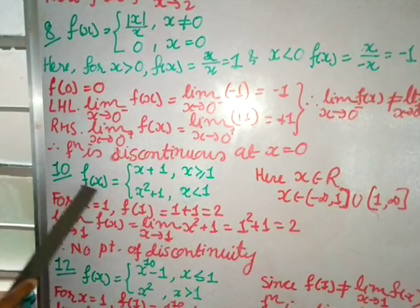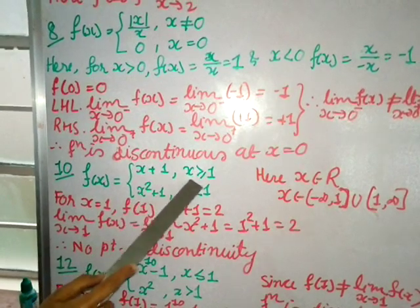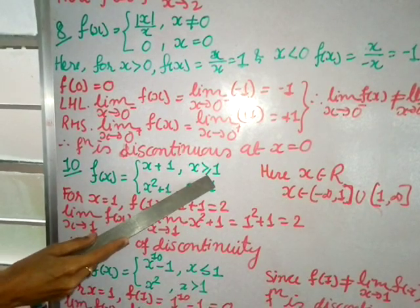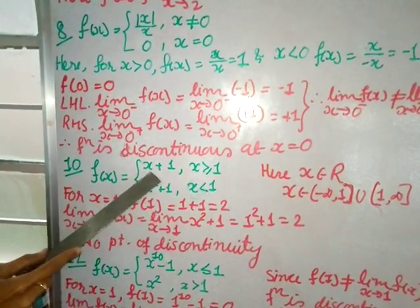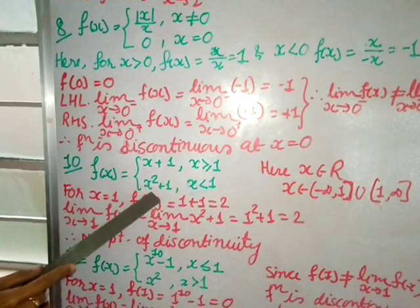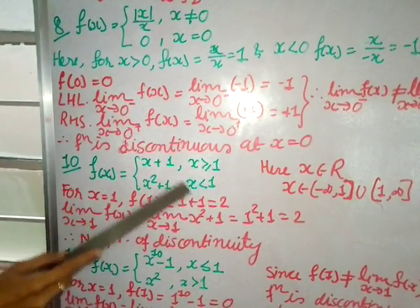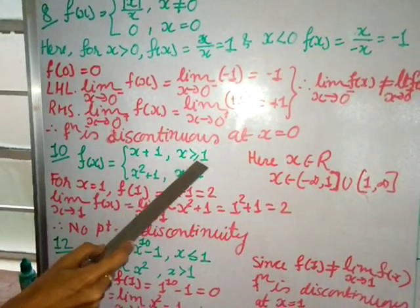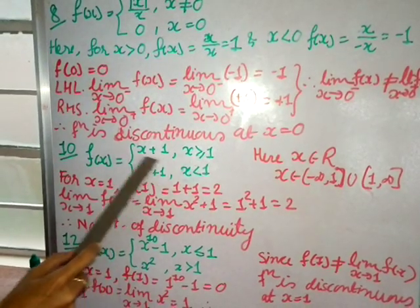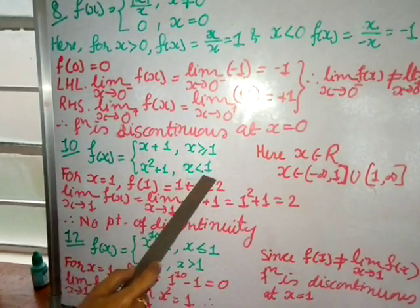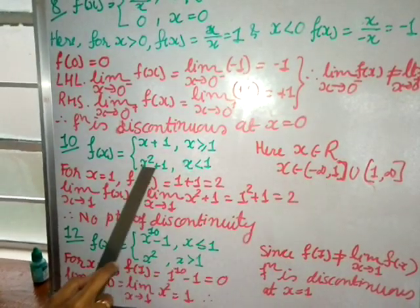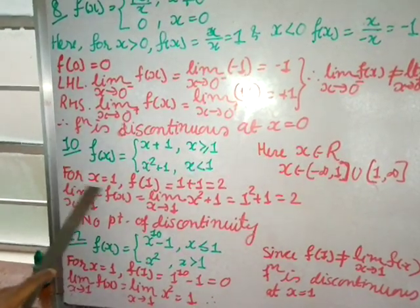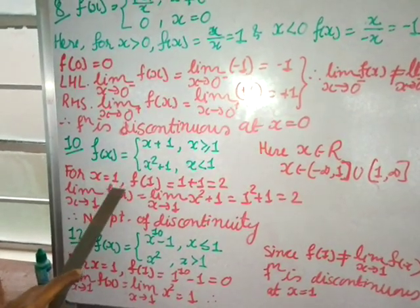Question 10: f(x) = x + 1 if x ≥ 1, and x² + 1 if x < 1. For x = 1, I use the first function; for the limit, I use the second. The interval covers all of ℝ: (−∞, 1) uses the second function and [1, ∞) uses the first, so x is taken from all of ℝ.